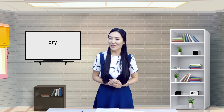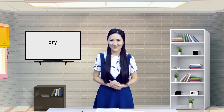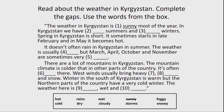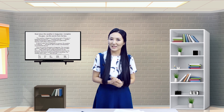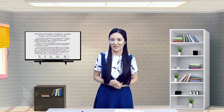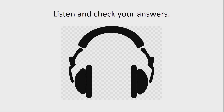Now let's read about the weather in Kyrgyzstan and complete the gaps using the words we have just unscrambled. Look at the box and choose the word which best fits the meaning of each sentence. Alright, it's time to work with your classmate now. Let's listen and check the answers all together. The weather in Kyrgyzstan is sunny most of the year.